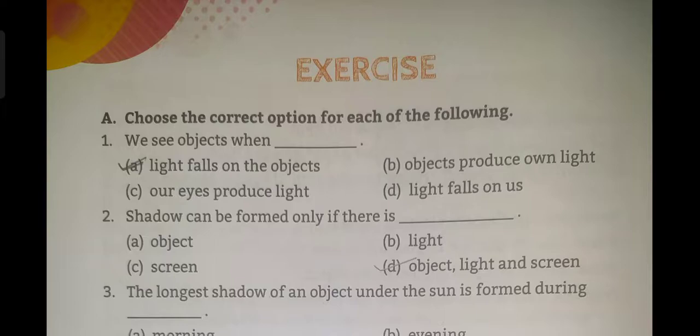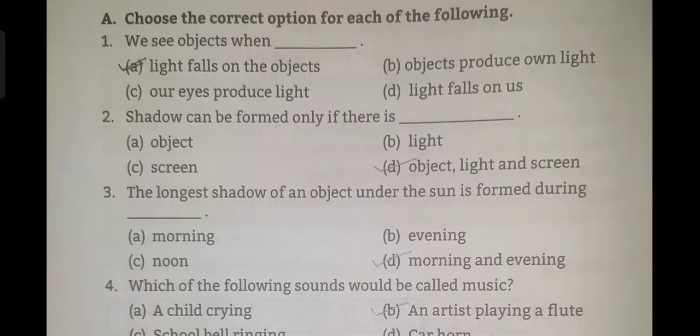We see objects when the light falls on the objects. Next, shadow can be formed only if there is - we all know three things are required to form a shadow: object, light and screen.